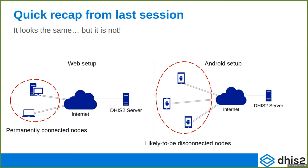When you have a web version of DHIS2, your workstations are permanently connected to the DHIS2 server, either through the internet or a local area network. Your nodes are fully connected when operating. But on the right side — and this is very important — your Android devices are designed to work offline. That's why I'm calling them 'likely to be disconnected.' Sometimes you'll have internet, sometimes you might even work directly connected, but one of the big benefits of Android is working in the field without a connection.